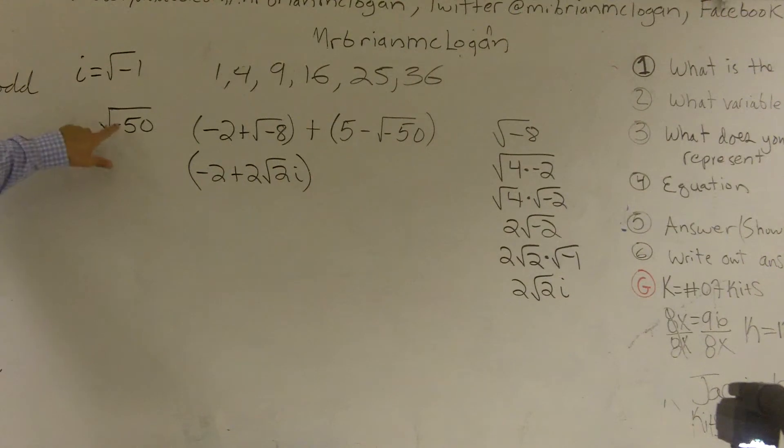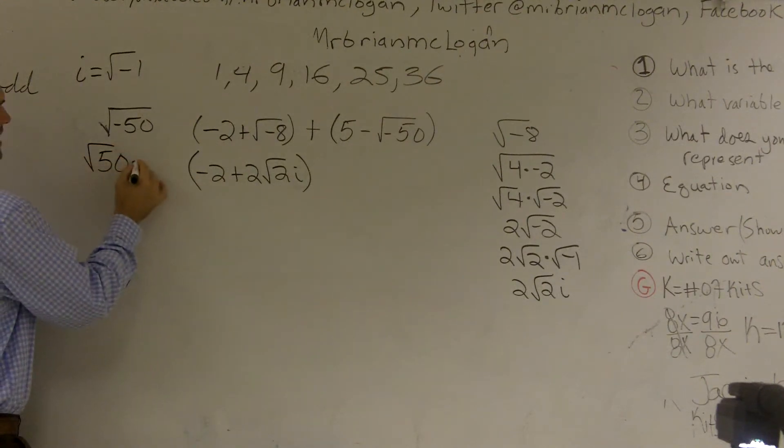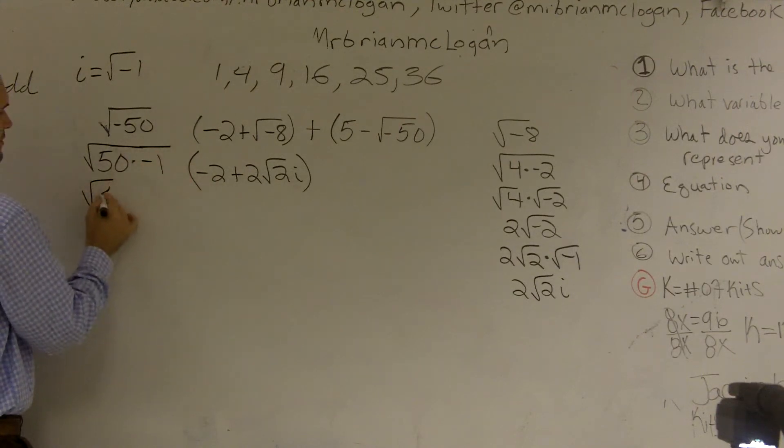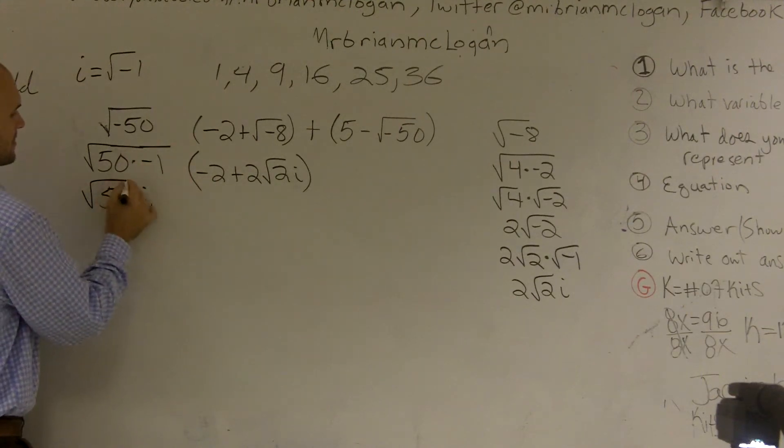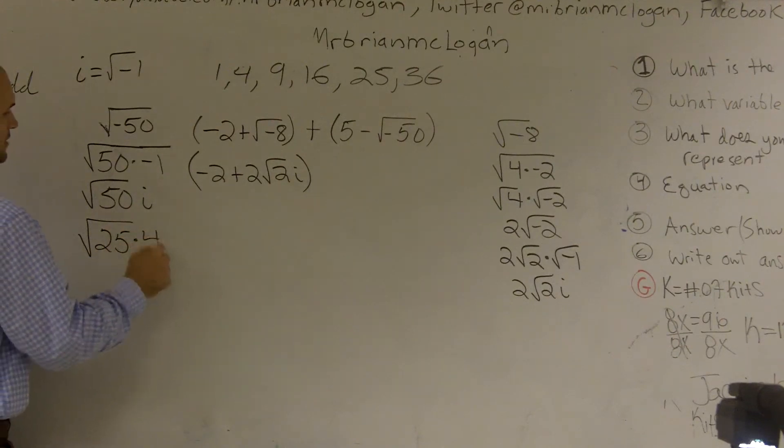Now let's look at 50. Since it's negative, I can factor out my negative 1. This is going to look like square root of 50 times negative 1, which would really be square root of 50 times i. What square number goes into 50? I can rewrite this as square root of 25 times 2.